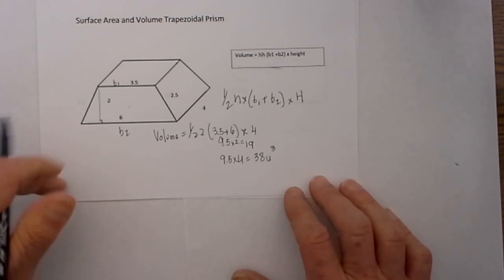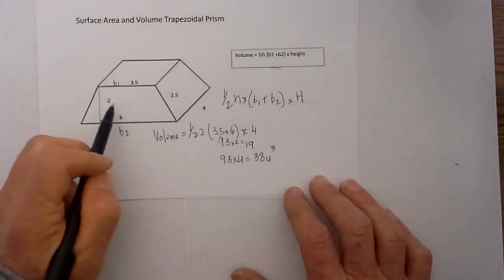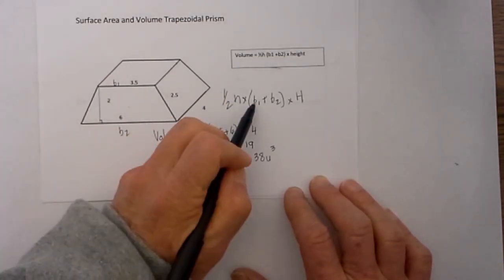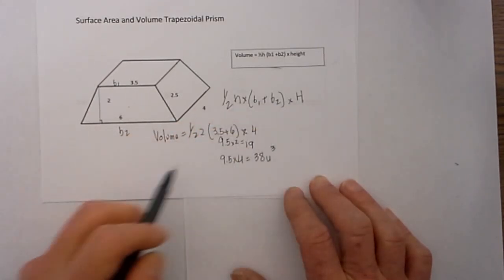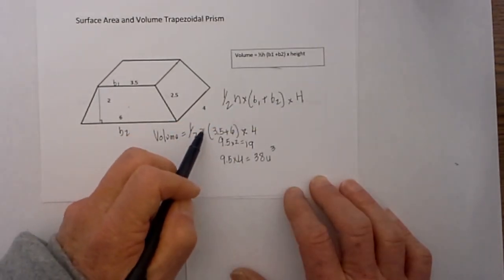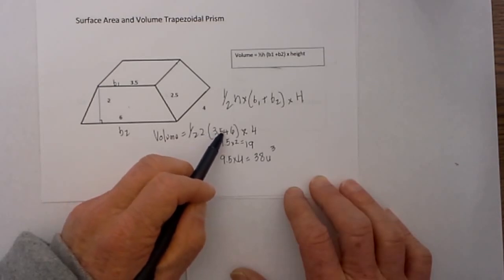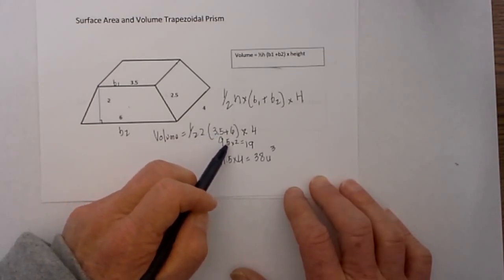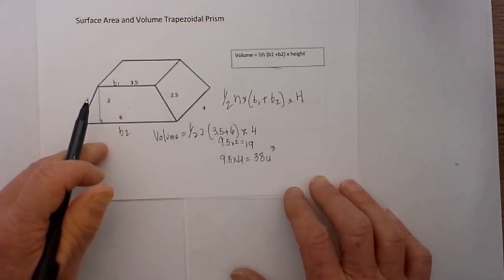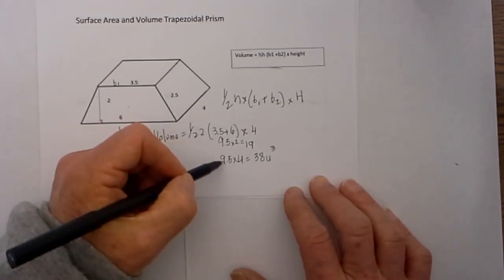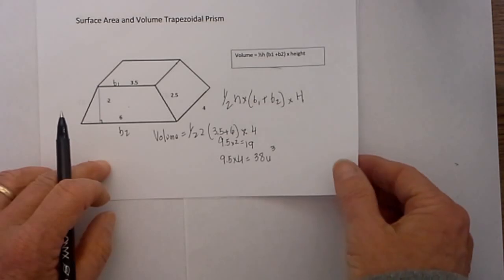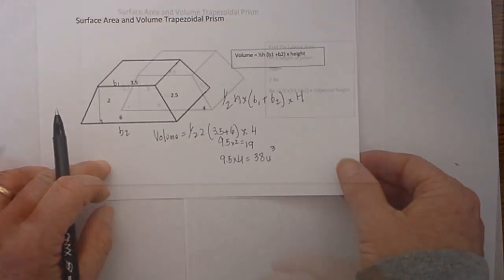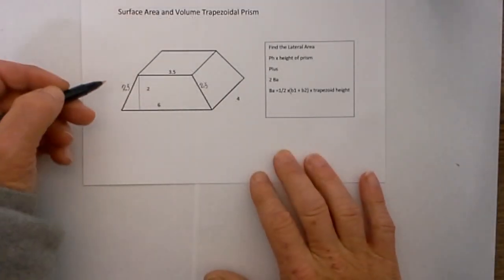Let me quickly recap what we did. We took the height which was 2, base 1 plus base 2 which is 6, times the height: 1 half times 2 times 3.5 plus 6 is equal to 9.5 times 2 which is equal to 19, half of 19 is 9.5 times 4 is 38 units cubed. Remember volume is always in units cubed.